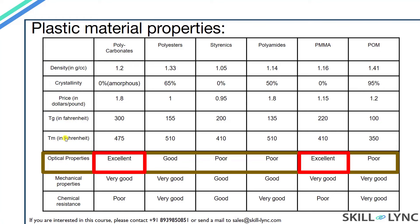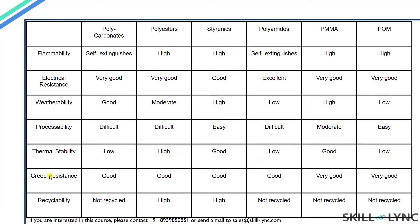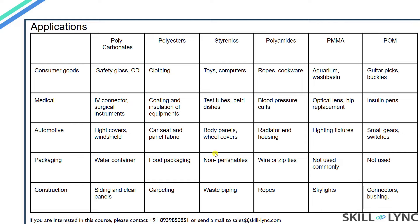This slide shows some more properties for common plastics. Weatherability is the ability of a material to withstand harsh atmospheric weather conditions. Creep is the tendency of a material to deform permanently when subjected to stresses over a long period of time. This slide also shows some common applications for the various types of plastics discussed.